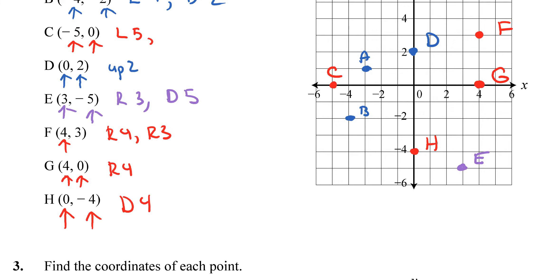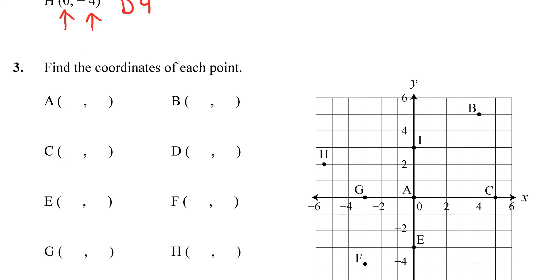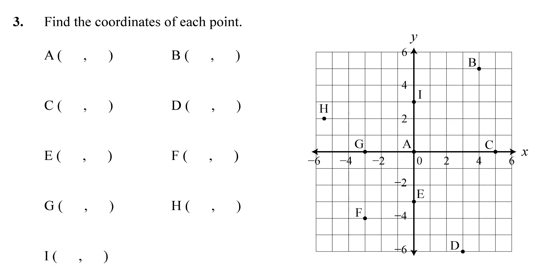Exercise 2 isn't too bad. Let's do question 3 — find the coordinates of each point. Letter A is right in the center, so it's 0 comma 0. Letter B: going right 4 and up 5, so B is 4 comma 5.